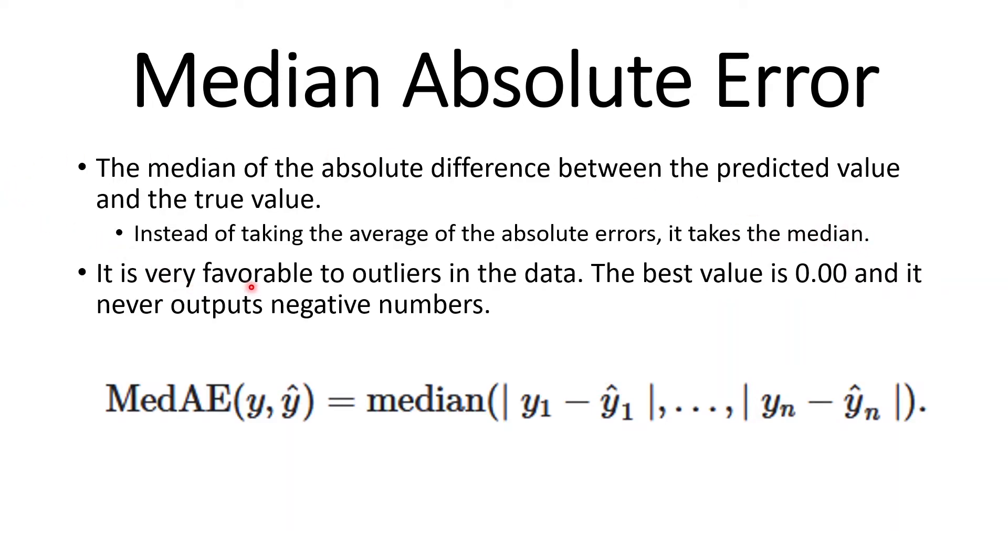It is very favorable to outliers in the data. The best score you could get is zero and it never outputs negative numbers. And of course it makes sense that it never outputs negative numbers because you are taking the absolute. Whenever you take absolute of something, you are taking the positive numbers. So instead of taking the mean, it's taking the median of the true value minus the predicted value.